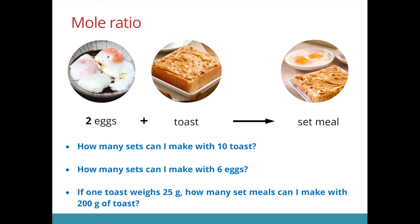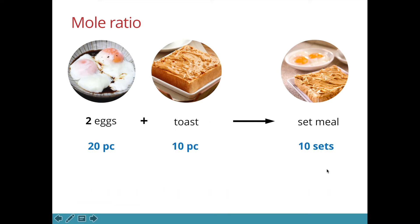Now if one toast weighs 25 grams, how many set meals can I make with 200 grams of toast? Because this ratio represents the number of pieces rather than the mass itself, we have to convert the mass to find the number of pieces. So in 200 grams, I would have 8 pieces of toast and that would mean I would be able to make 8 sets. So to reiterate, the ratios represent the number of pieces that go in. If I were to increase the number, the number of sets I can make would increase as well.